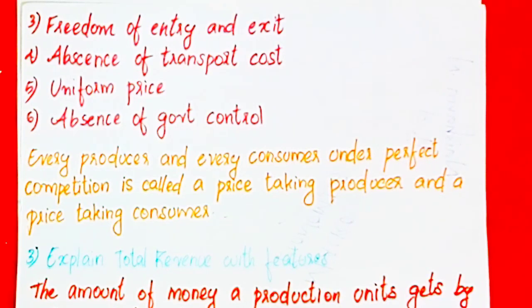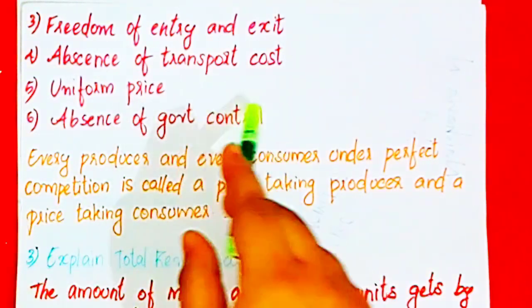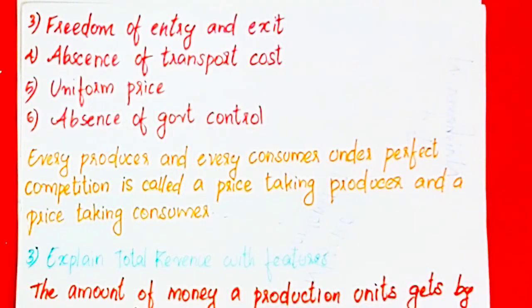The next feature is: Absence of transport cost — transportation cost is not required. Then: Uniform price. And: Absence of government control — government control is not required.